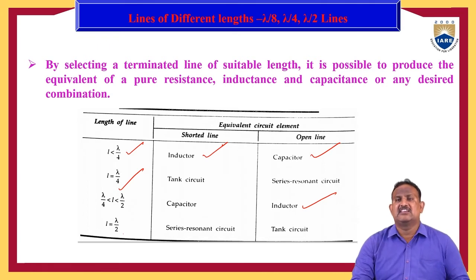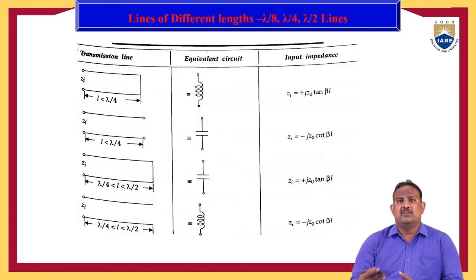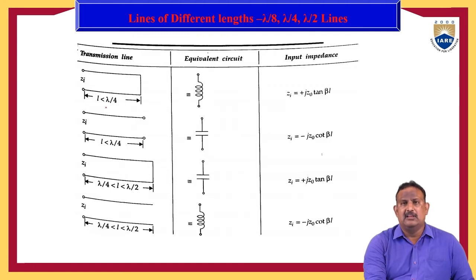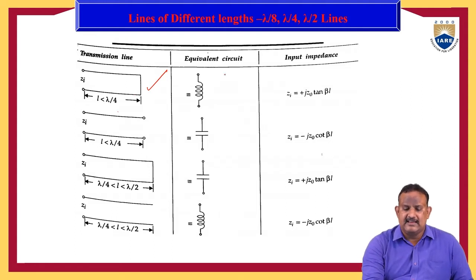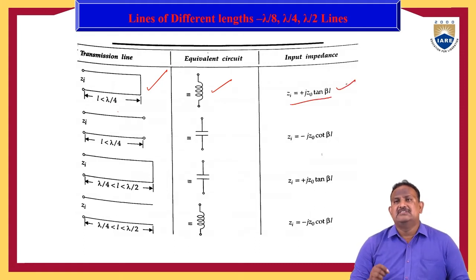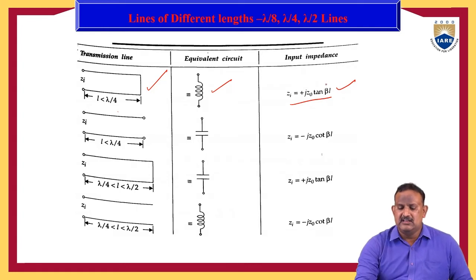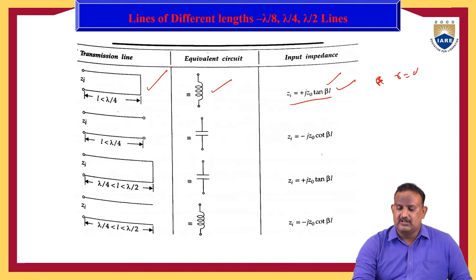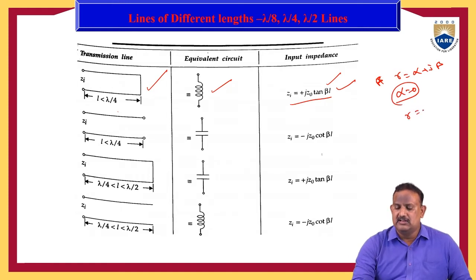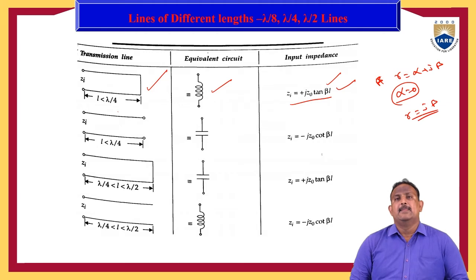If the length of the line is less than lambda by 4 and it is short circuited, the equivalent circuit acts as an inductor. The input impedance is Z_i = j·Z₀·tan(βl), where β is the phase constant. We can write γ = α + jβ; for a good conductor α = 0, so γ = jβ.